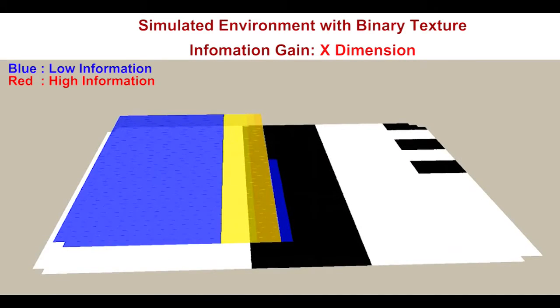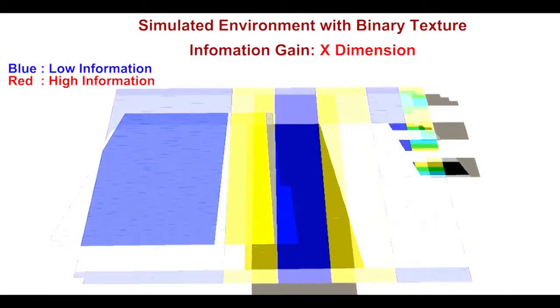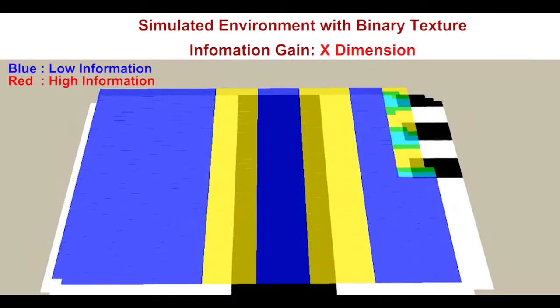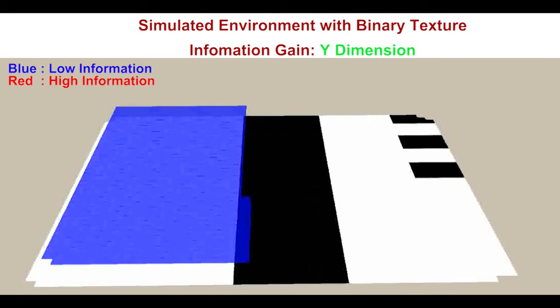Afterward, pose covariances are updated according to the expected visual information gain associated with the image at a given waypoint along the trajectory. The information gain is computed by exploiting the dense textures and structures of the scene.